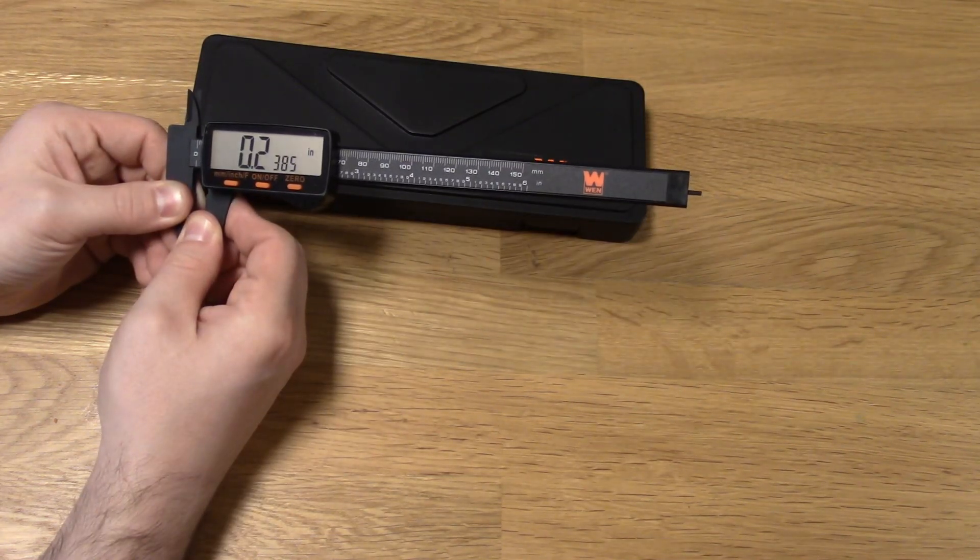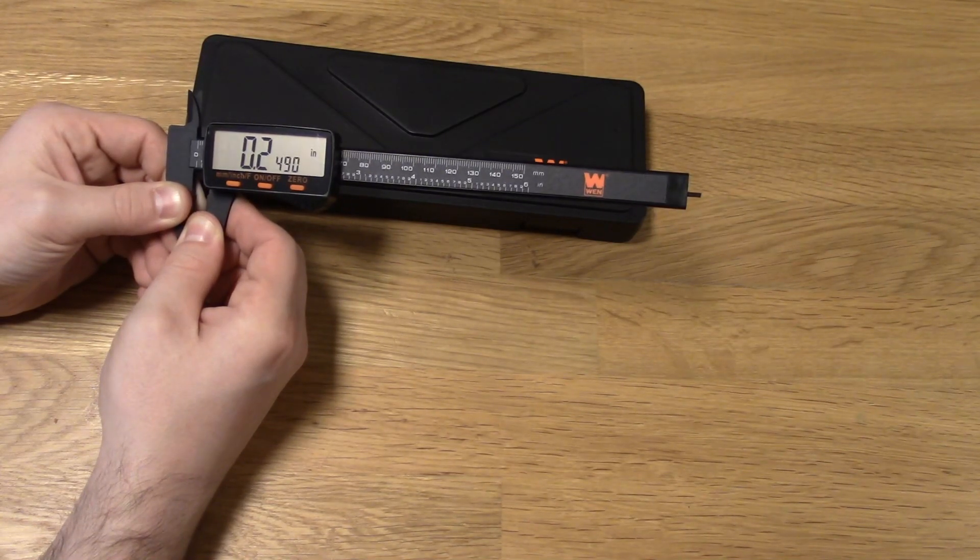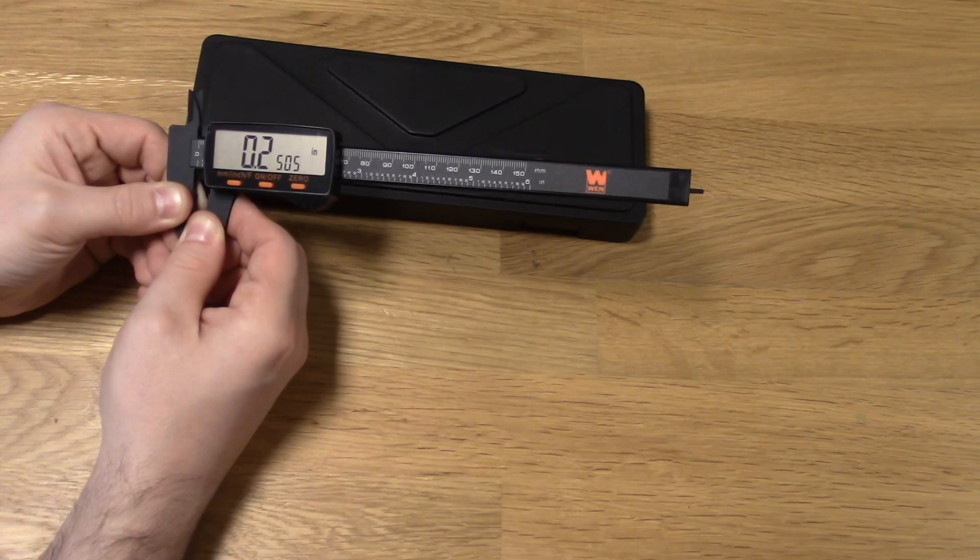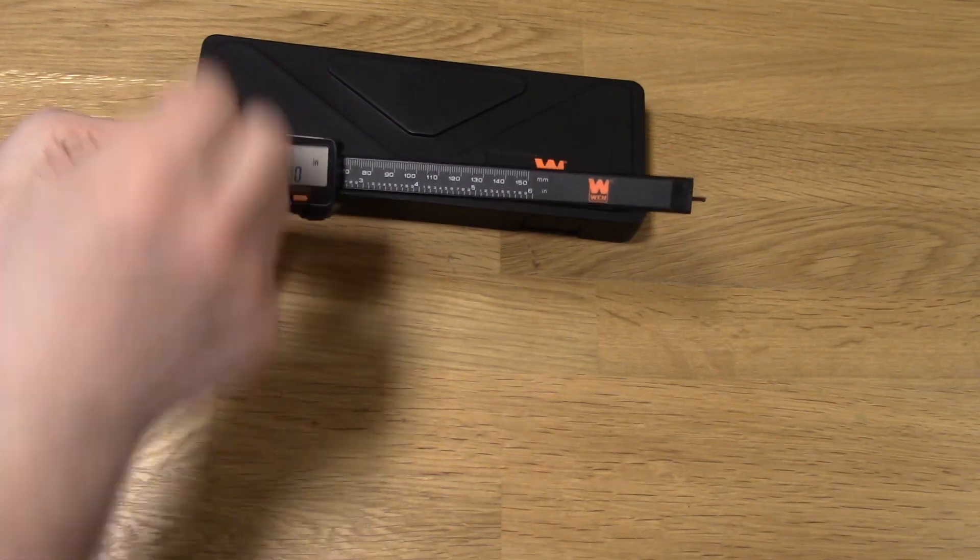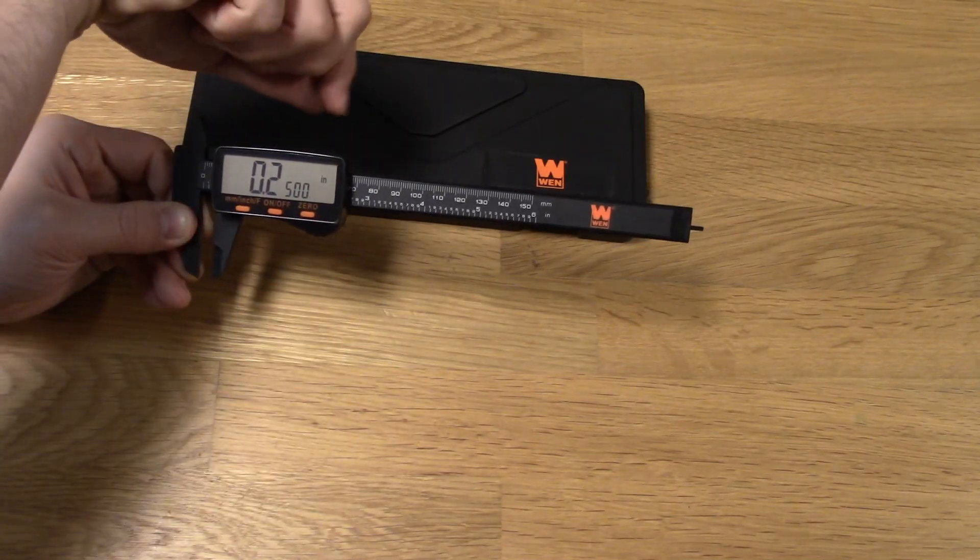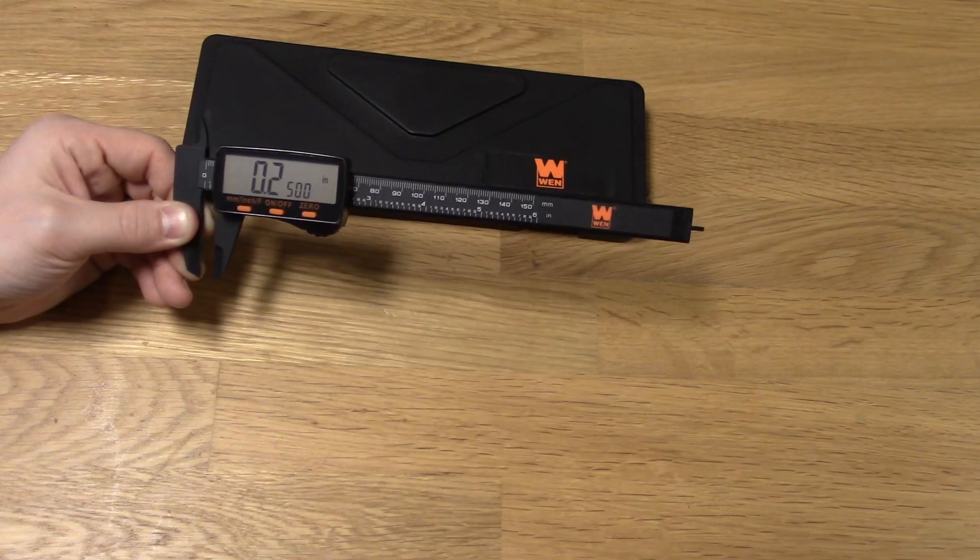It's a very precise caliper. So usually calipers that are this precise have a little dial knob on the top that you screw. This one doesn't. The one that did was like an extra 10 bucks and I don't really need that.